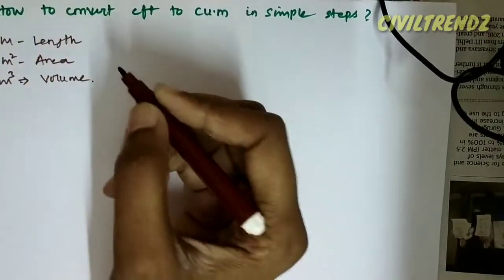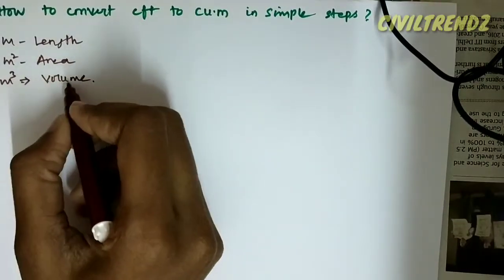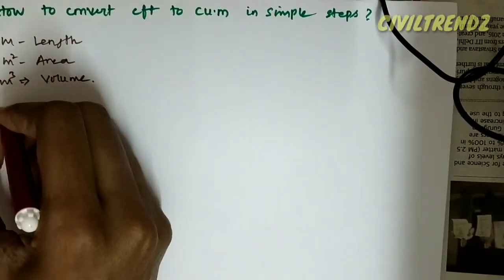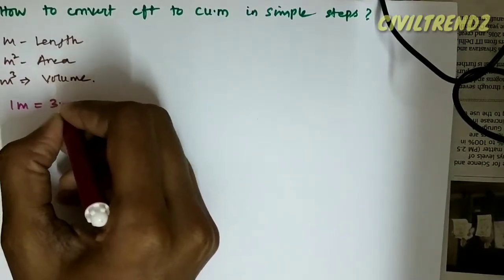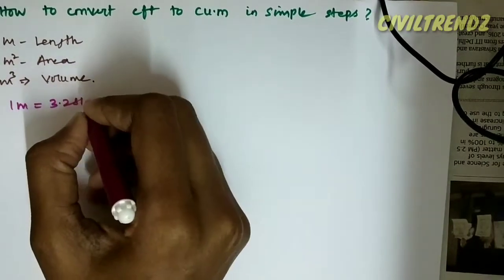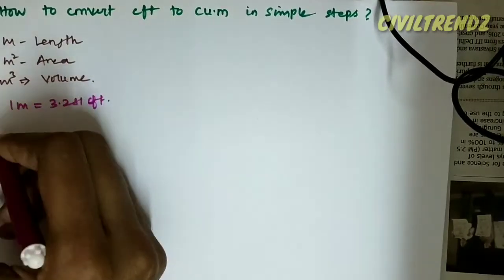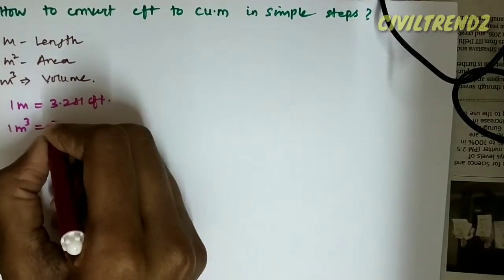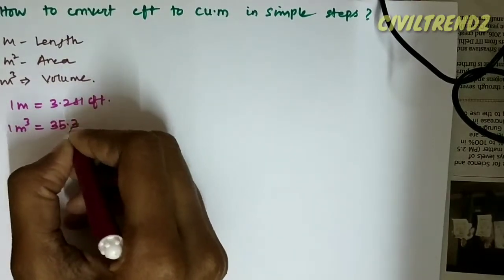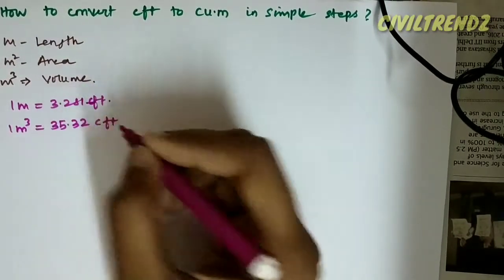So, cubic feet to cubic meter — both are units of volume. 1 meter is equal to 3.281 feet, and 1 meter cube is equal to 35.32 cubic feet. This 35.32 is in cubic feet.